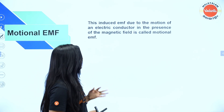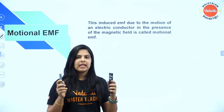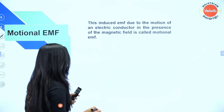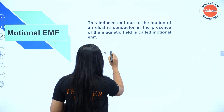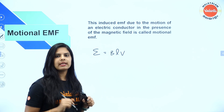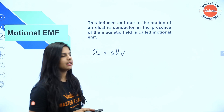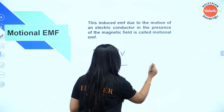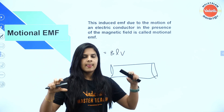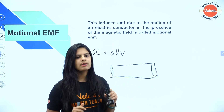Motional EMF is induced EMF due to the motion of electrical conductors in the presence of a magnetic field. The equation is BLV — motional EMF depends on the magnetic field, the length of the conductor, and the velocity.